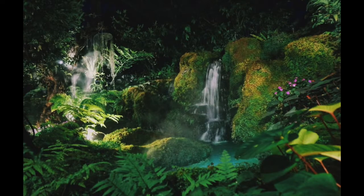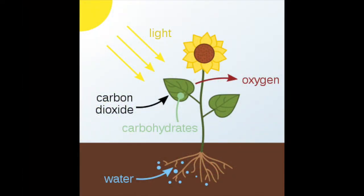Rainforests also help to reduce global warming. This is because trees and other plants absorb carbon dioxide in the atmosphere during the process called photosynthesis. Photosynthesis is the process used by green plants to produce food, using sunlight, water, and carbon dioxide.